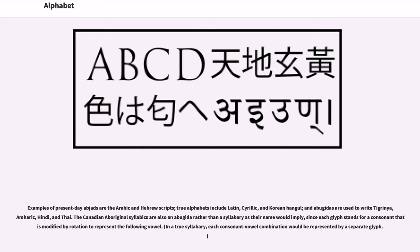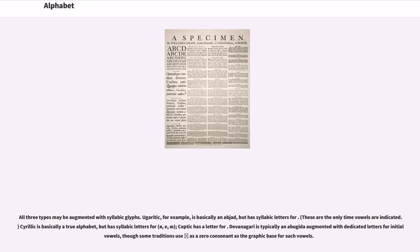Examples of present-day abjads are the Arabic and Hebrew scripts. True alphabets include Latin, Cyrillic, and Korean Hangul, and abugidas are used to write Tigrinya, Amharic, Hindi, and Thai. The Canadian aboriginal syllabics are also an abugida rather than a syllabary as their name would imply, since each glyph stands for a consonant that is modified by rotation to represent the following vowel. In a true syllabary, each consonant-vowel combination would be represented by a separate glyph. All three types may be augmented with syllabic glyphs.